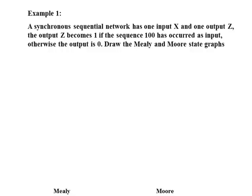First of all, we draw the Mealy state graph and start with the initial state S0. When the network receives a 1 as input, the network goes to another state S1. Now when the network receives a 0 as input, it goes to another state S2 and the output is still 0.